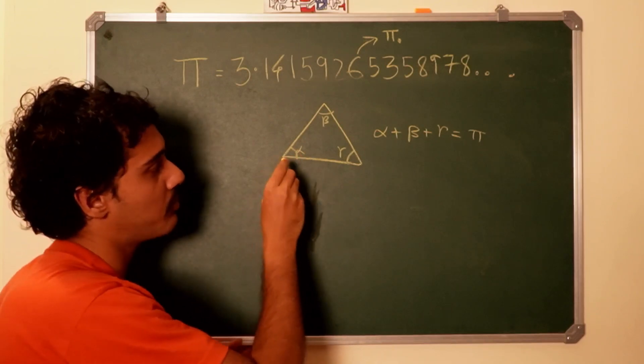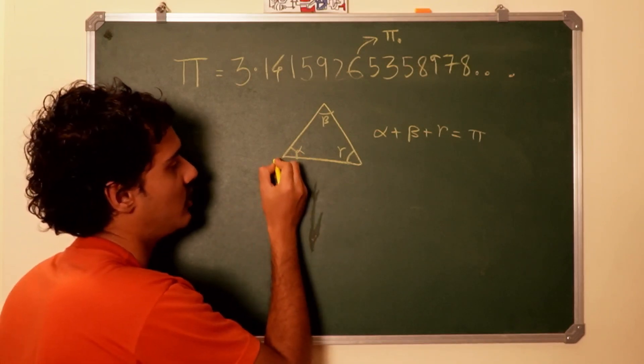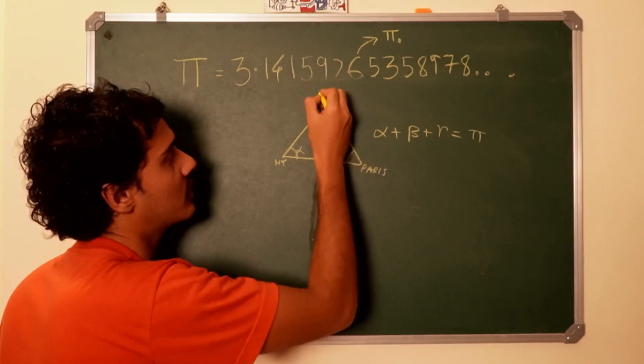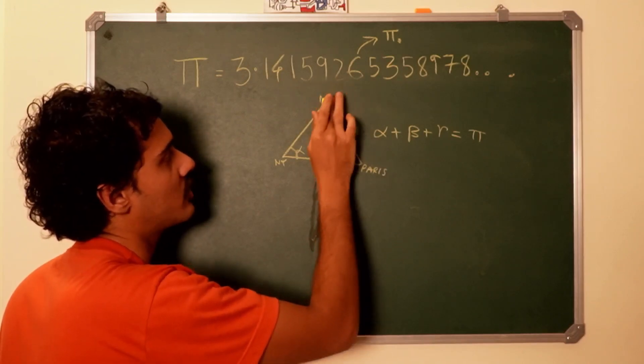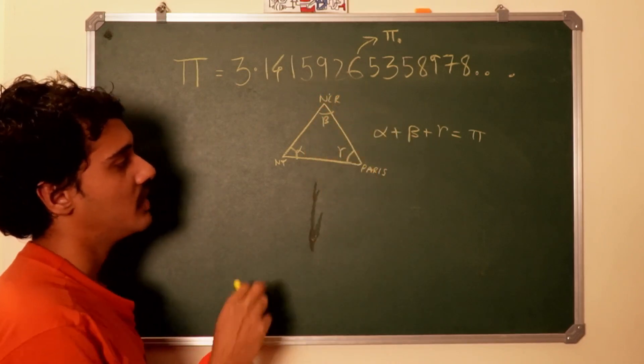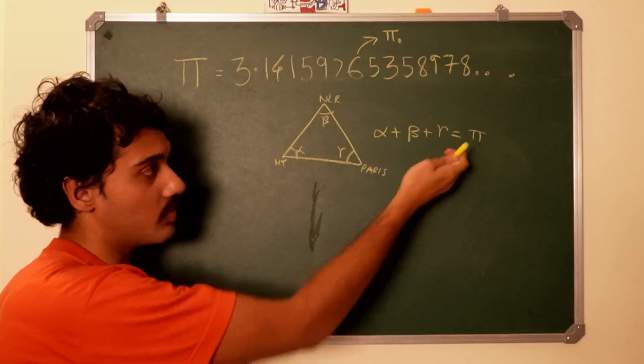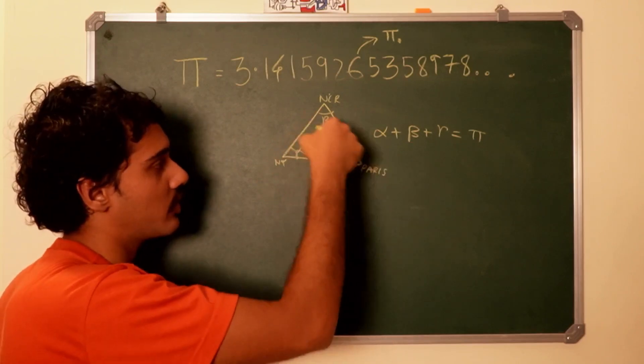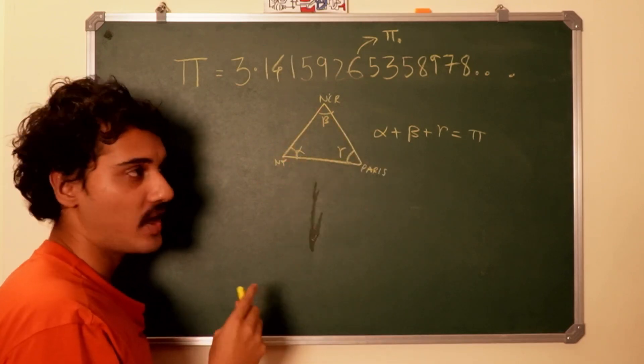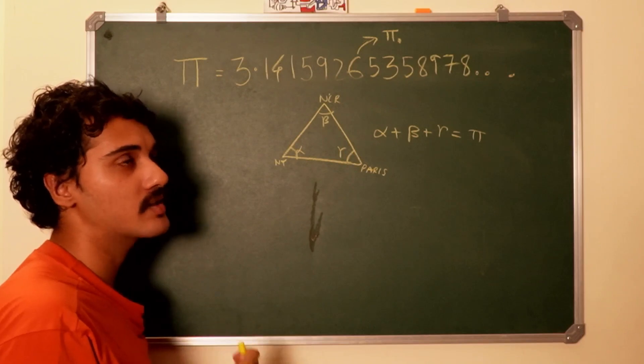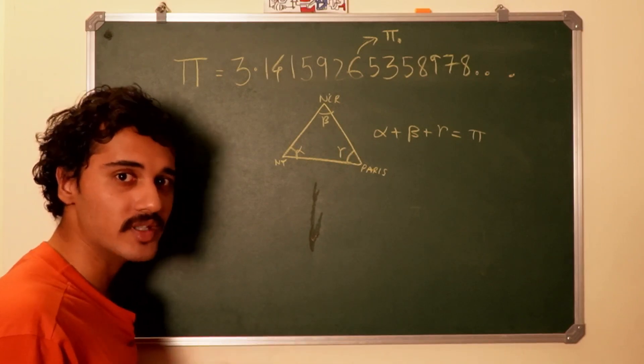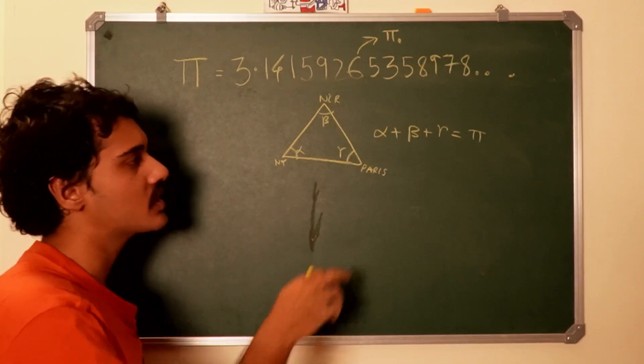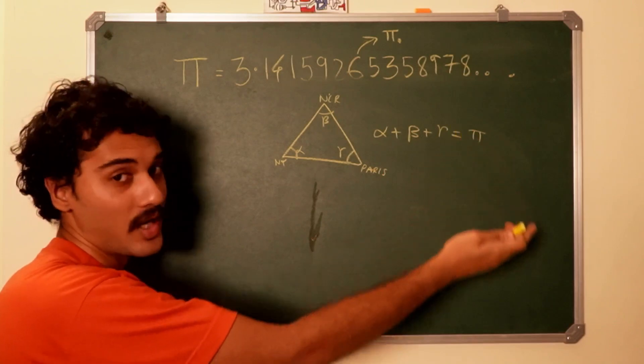Now if you place these angles like one in New York, one in Paris, and one in New Delhi—I don't know what NCR stands for—anyway, if you do this, it doesn't equal pi. I think it equals something greater than pi because this is not a flat triangle anymore. And by the definitions of straight lines and so on on a curved surface that is Earth, you would still get a triangle on this curved surface but you wouldn't get the sum of angles as pi.